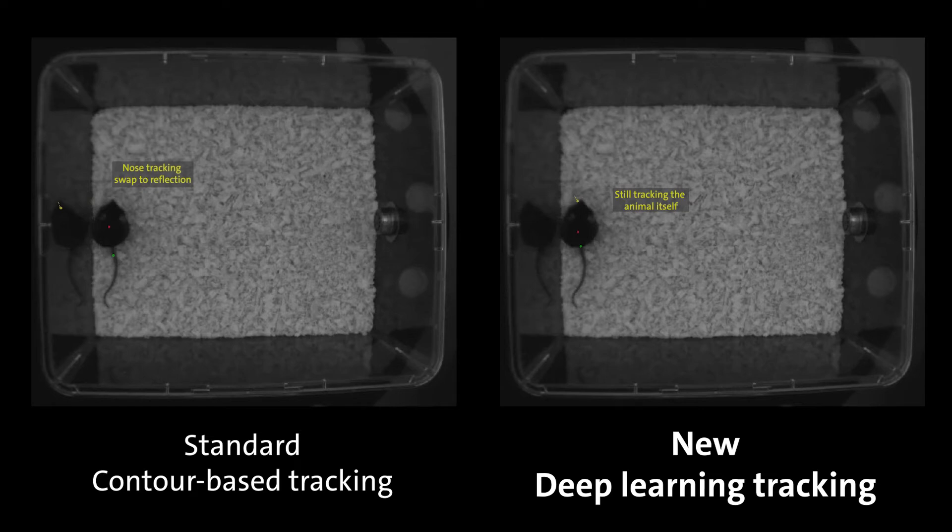While contour-based tracking detects the nose point of the reflection of the animal, the deep learning technology does not get confused.